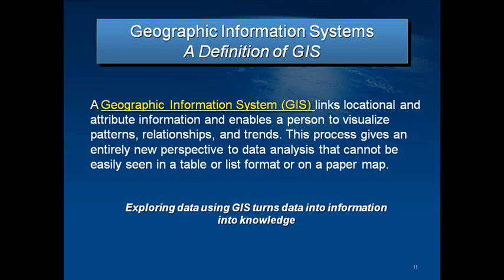For years they have been trying to come up with a nice concise definition of what GIS is — it's pretty expansive. GIS links locational and attribute information and enables a person to visualize patterns, relationships, and trends. This process gives an entirely new perspective to data analysis that cannot be easily seen in just a table or list format, or on just a paper map. Exploring data using GIS turns data into information, into knowledge.